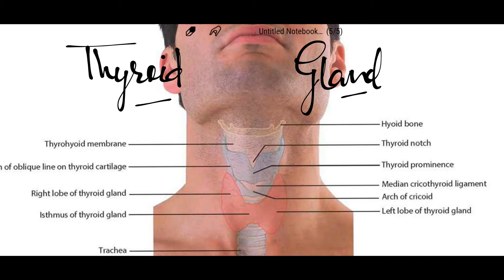One important point to add is that the thyroid gland is the only type of gland that uses natural iodine for the synthesis of its hormones, which are stored within the follicles to be used according to the needs of the body.